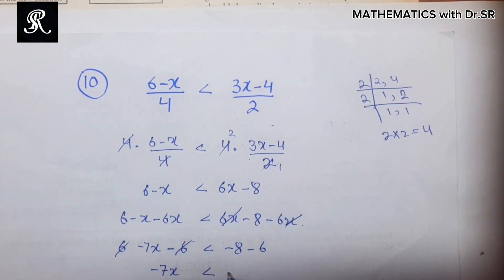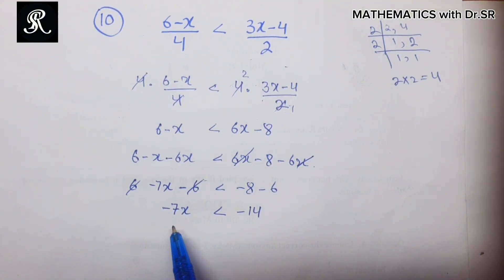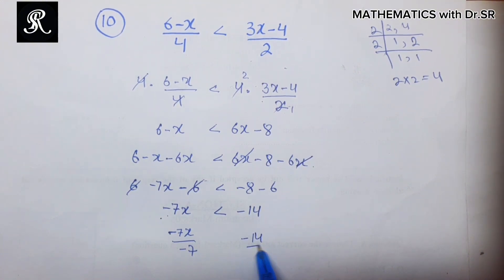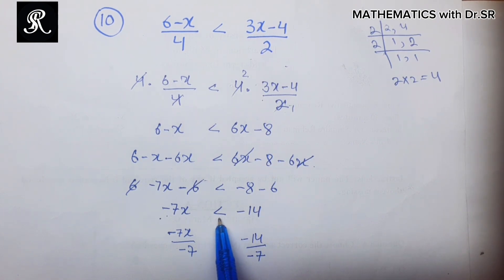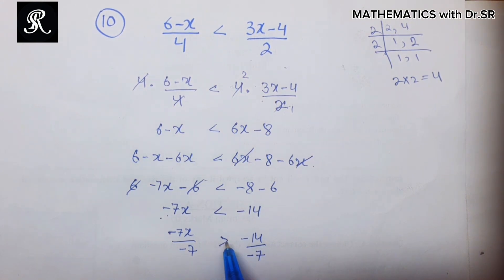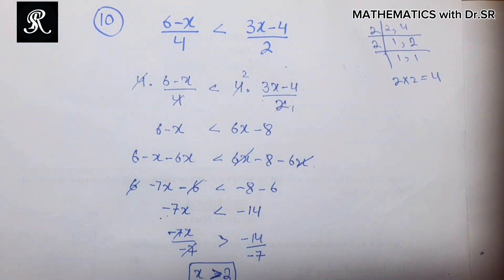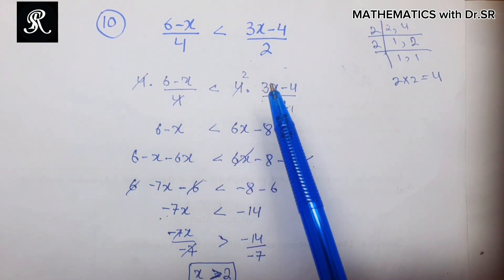We have negative 7x strictly less than negative 14. Since negative 7 is multiplied with x, we divide throughout by negative 7. We know that whenever we multiply or divide by a negative number in an inequality, the inequality sign reverses. So from here we get x strictly greater than 2. This is the solution for the above inequality.